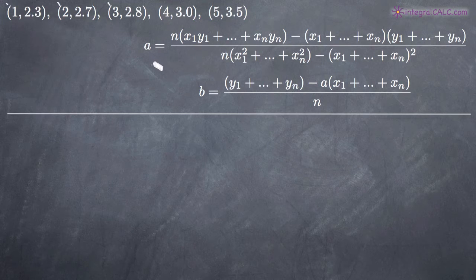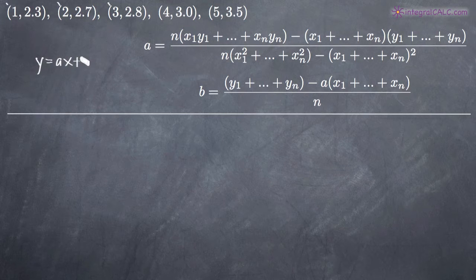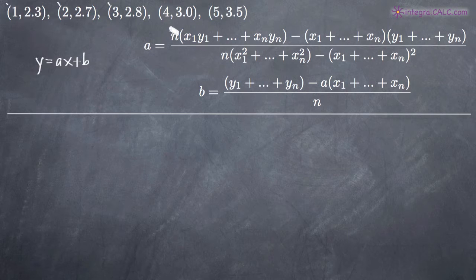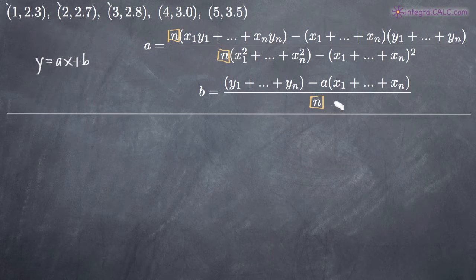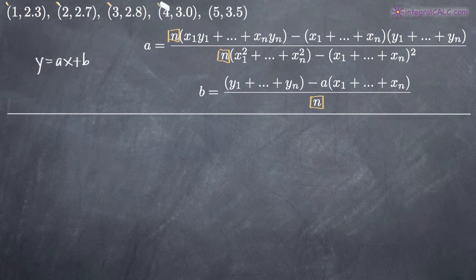We're going to use the formulas for a and b to find the least squares line. Remember that the formula for the least squares line is y = ax + b. We need to find a and b. Keep in mind that n appears in both formulas and represents the number of data points. Here we have five data points, so n equals five.